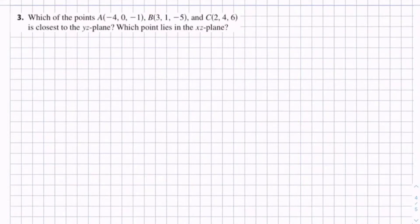Which of the points A(-4, 0, -1), B(3, 1, -5), and C(2, 4, 6) is closest to the yz-plane? Which point lies in the xz-plane?